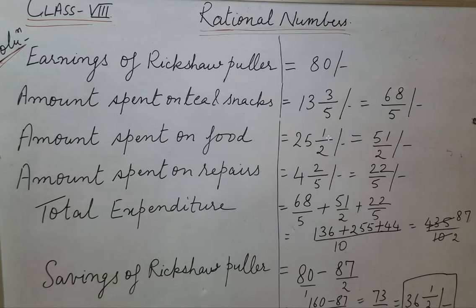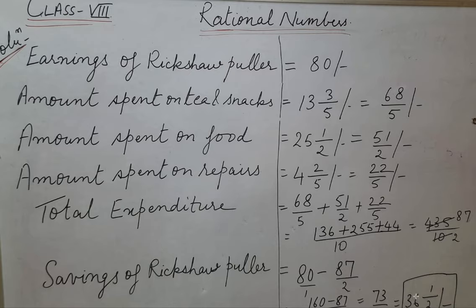Savings of the rickshaw puller = ₹80 (earnings) minus 87/2. We take the LCM, denominator is 2, so it becomes 160/2 minus 87/2, which equals 73/2. We convert it to a mixed number: 36½ rupees. That is your answer. Always write the answer in a rectangular box. This is how you solve the question.